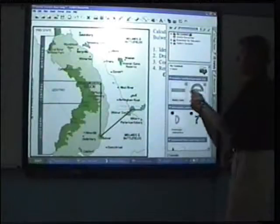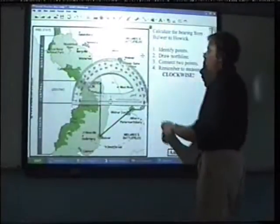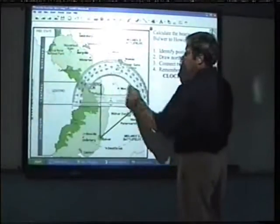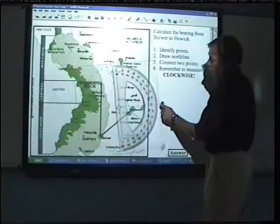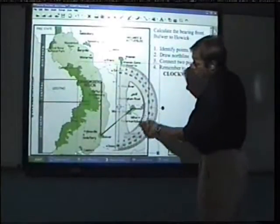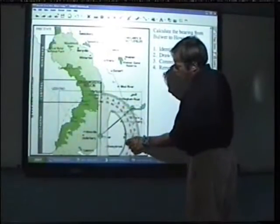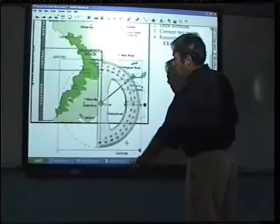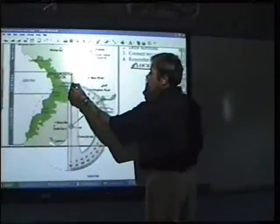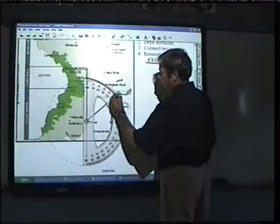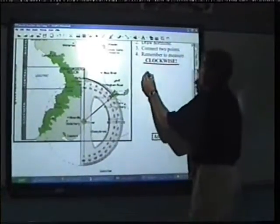And they need to come and get the protractor from the gallery and then measure the angle by rotating the protractor. Put it in the correct area and then importantly remember to measure clockwise. The angle would be from that direction and they need to write down the correct answer.